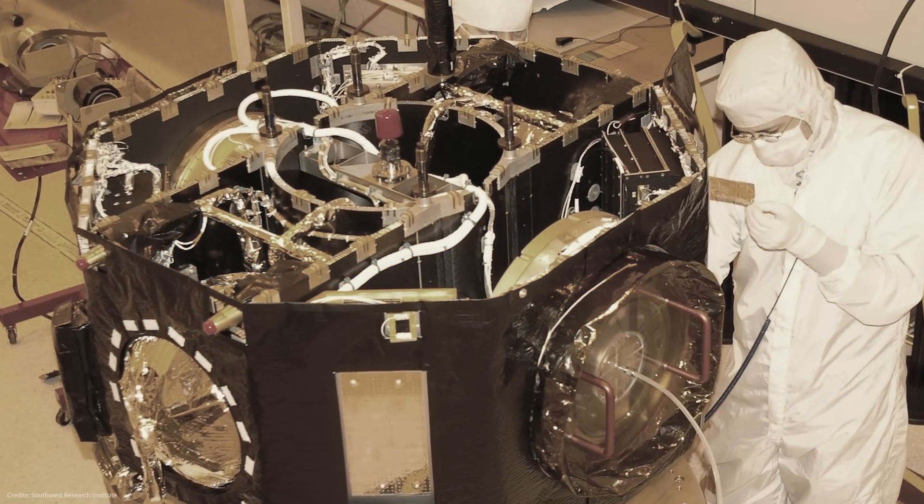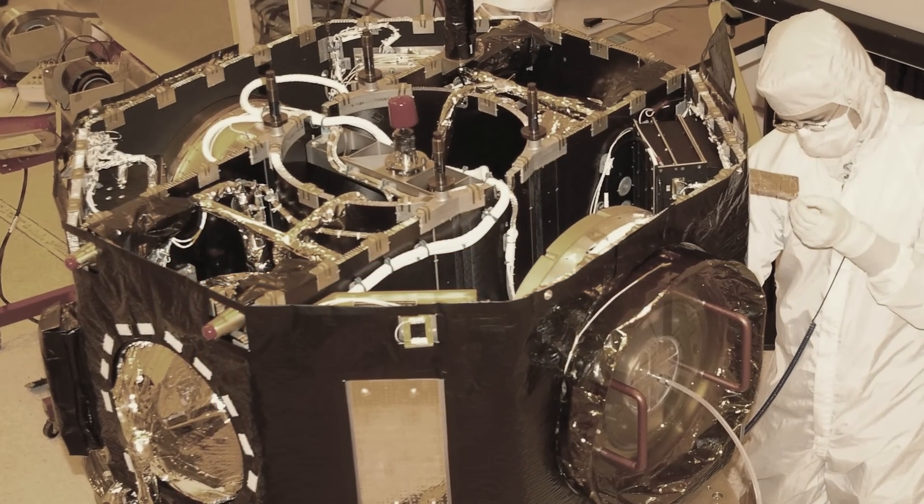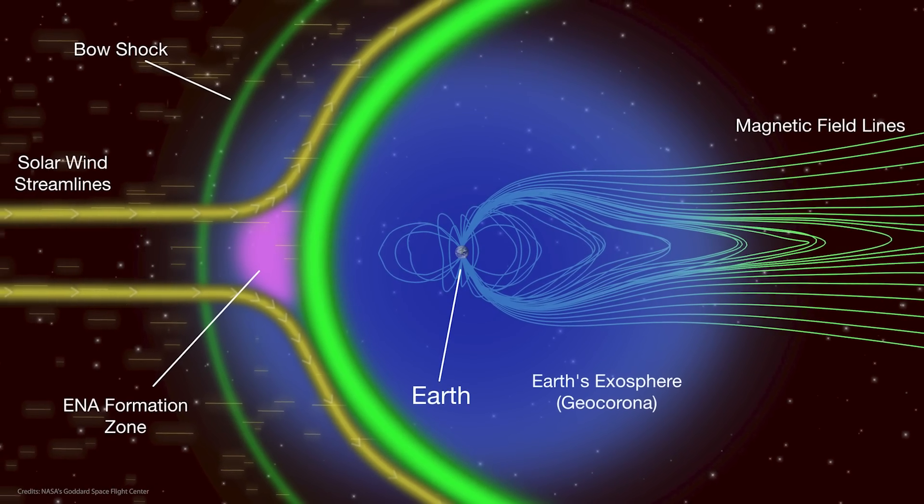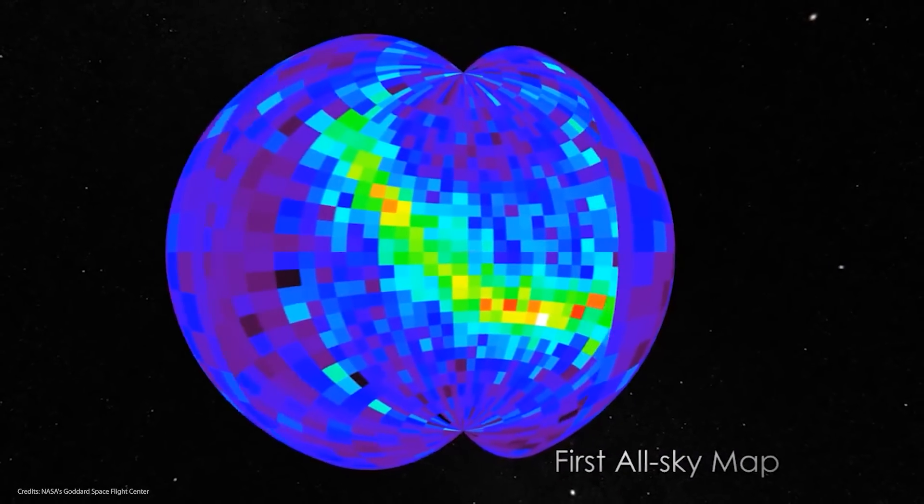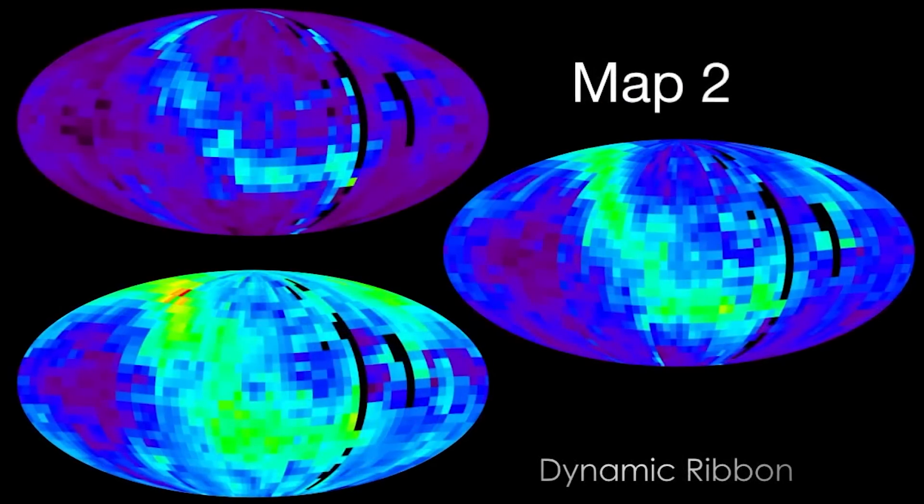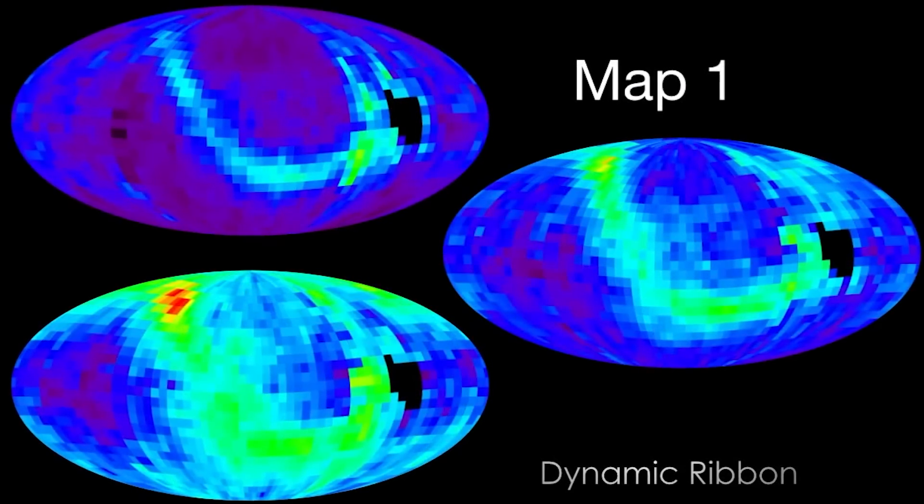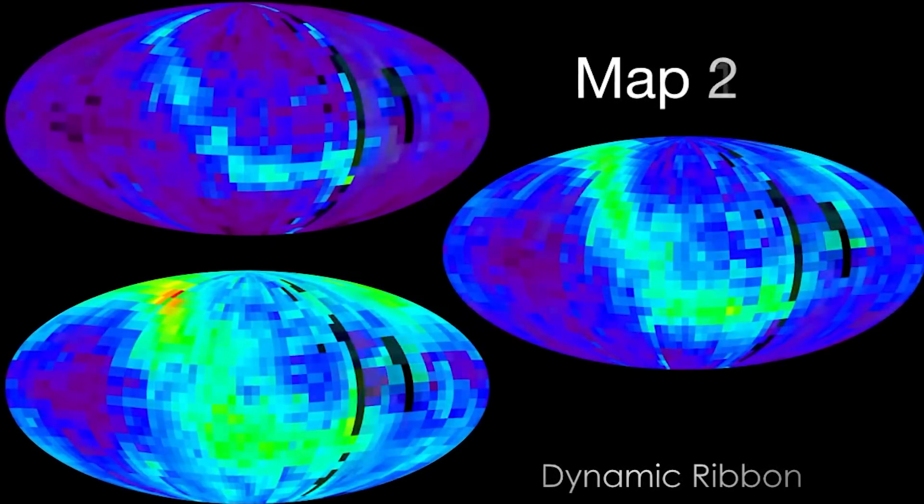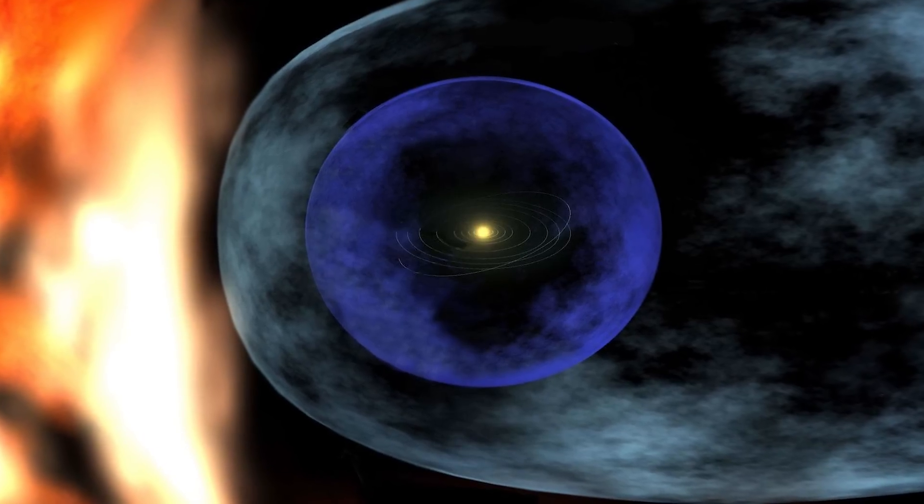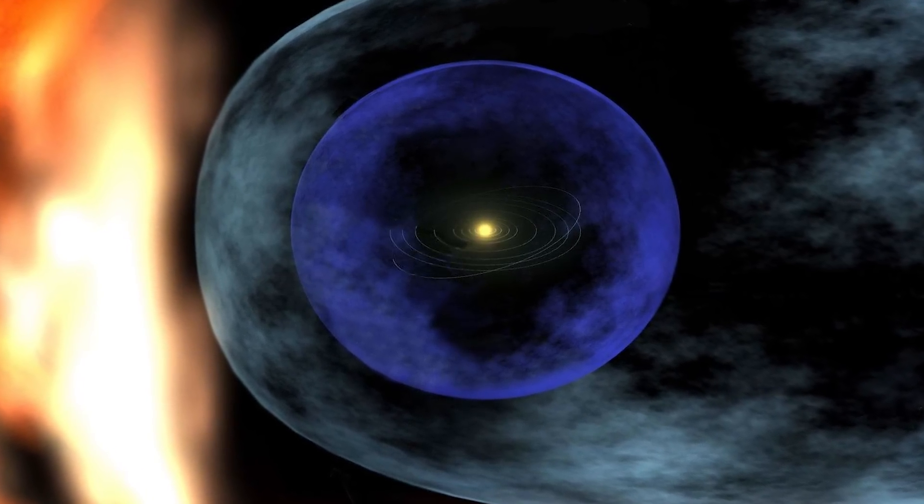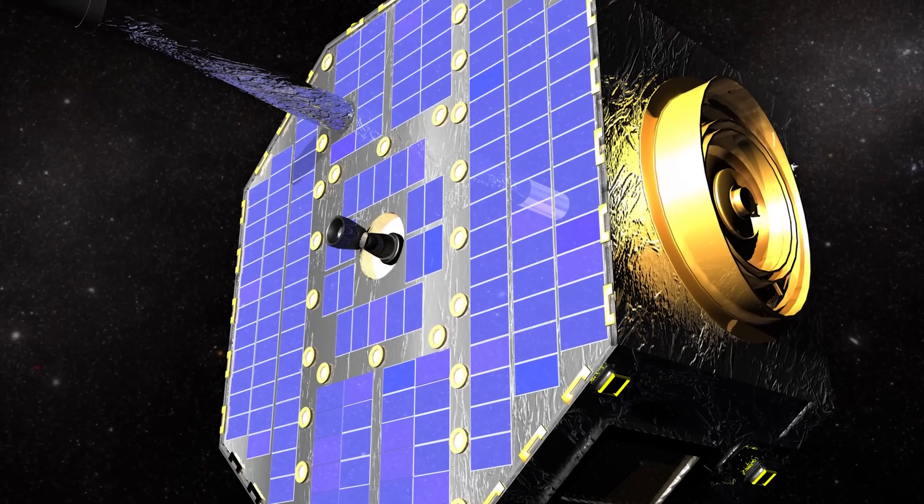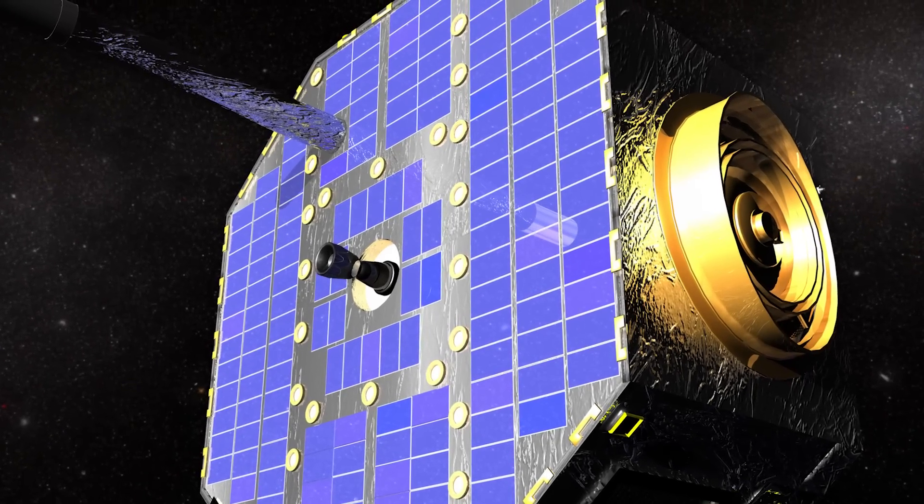IBEX carried two main instruments to help it study the interstellar environment: the ENA camera and the high-energy telescope. The ENA camera studied the energetic neutral atoms, and the high-energy telescope used energy spectroscopy to map the interstellar environment of the solar system. IBEX made some incredible discoveries during the mission, such as the observation of a ribbon of ENA emission at the boundaries of the solar system, and the map of the interstellar medium from its instruments. It also greatly expanded our knowledge of the solar system's interaction with interstellar space, and taught us much more about how our galaxy works. The mission was a great success, and has contributed massively to our understanding of interstellar space.